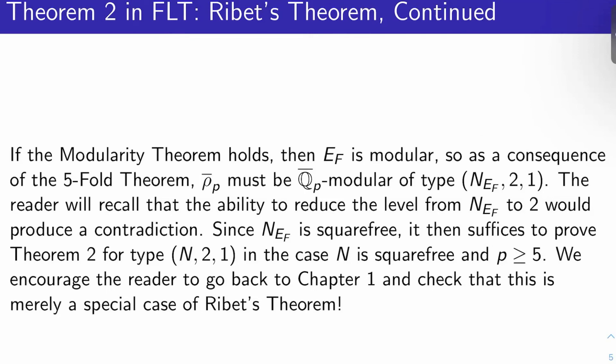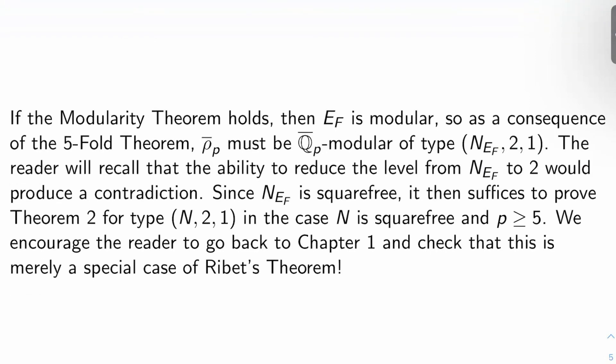If you recall, the ability to reduce this level from N_{E_F} down to 2 would produce a contradiction, because there are no weight two cusp forms at level two for Γ_0(2).